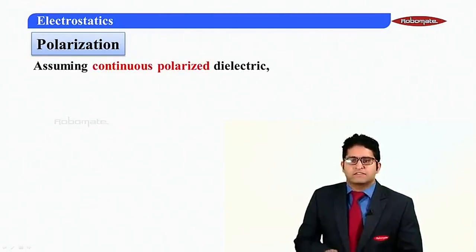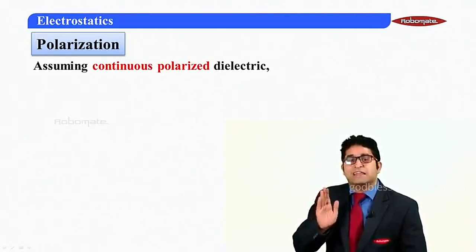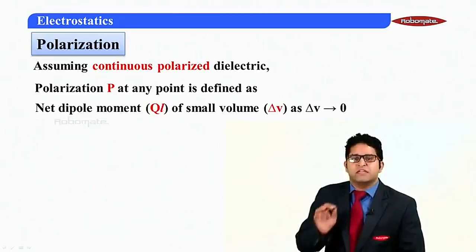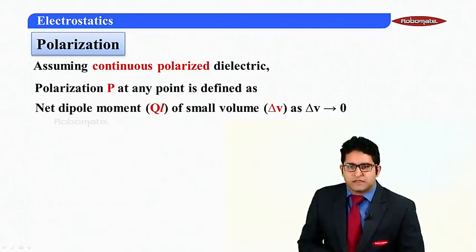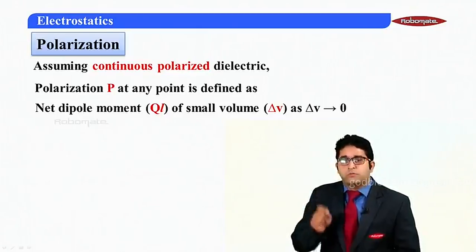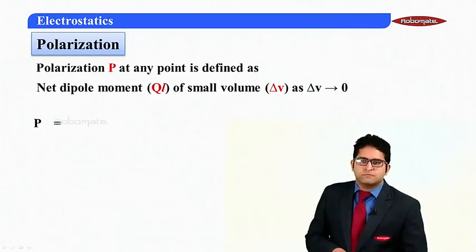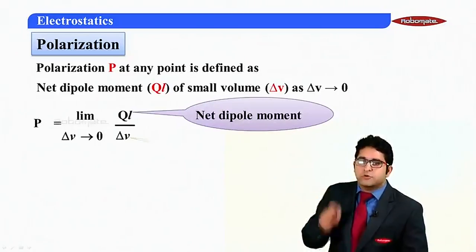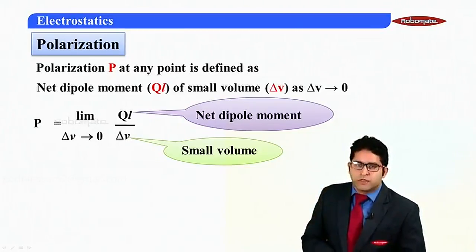Now, assuming continuous polarization, polarization P at any point can be defined as the net dipole moment of a small volume delta V, where delta V tends to zero. Mathematically, capital P equals the limit as delta V tends to zero of capital Ql divided by delta V, where Ql represents the net dipole moment and delta V represents the small volume.